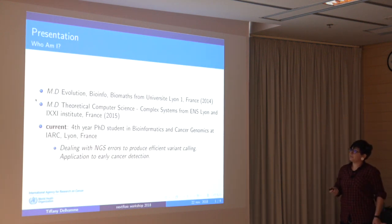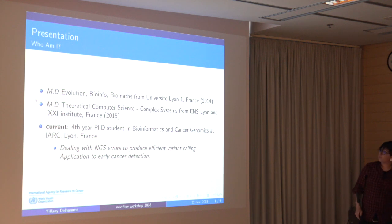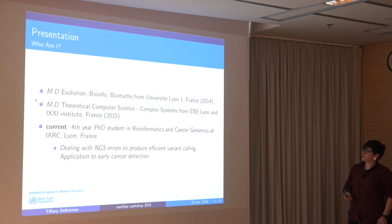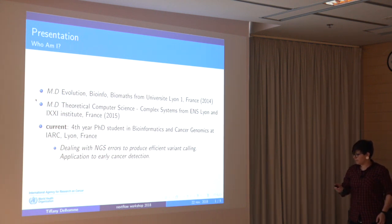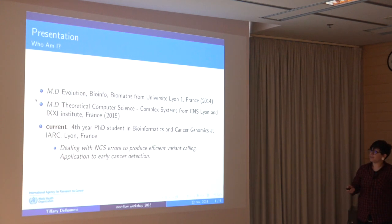Let me introduce myself a little bit. I graduated with two different masters — one in evolution and bioinformatics, and one in theoretical computer science. Currently I am in the fourth year of my PhD in the genetics group of the IARC, working on the identification of NGS errors to produce efficient variant calling.